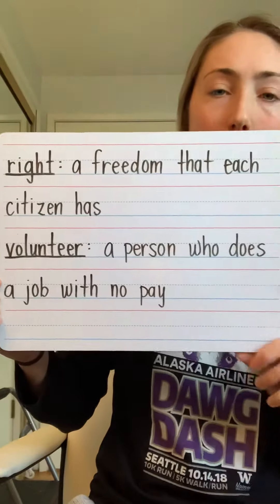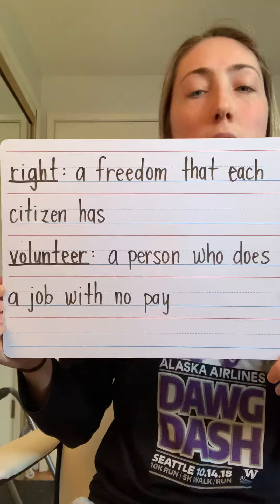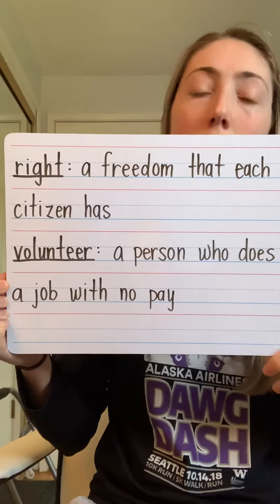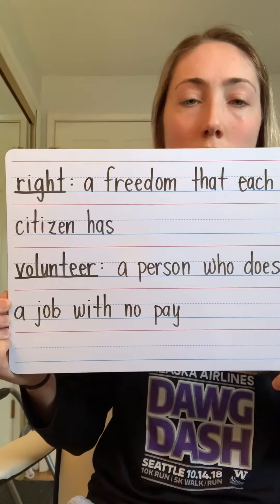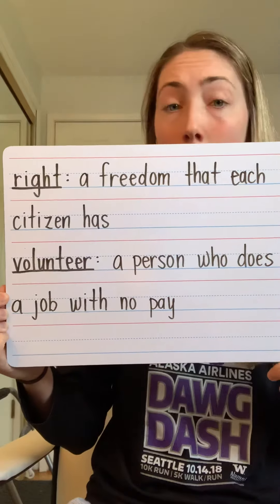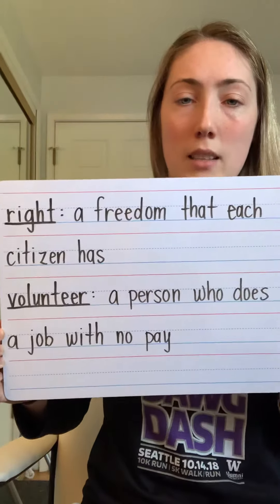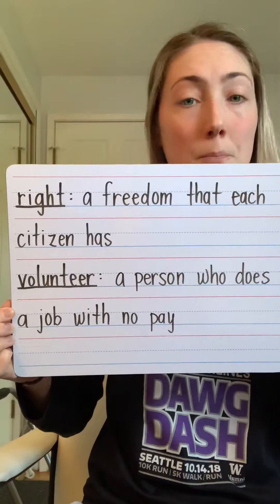The other two vocabulary words in this chapter are right, which is a freedom that each citizen has, and volunteer, which is a person who does a job with no pay. If you want to take the time to write this down, you can pause the video now.